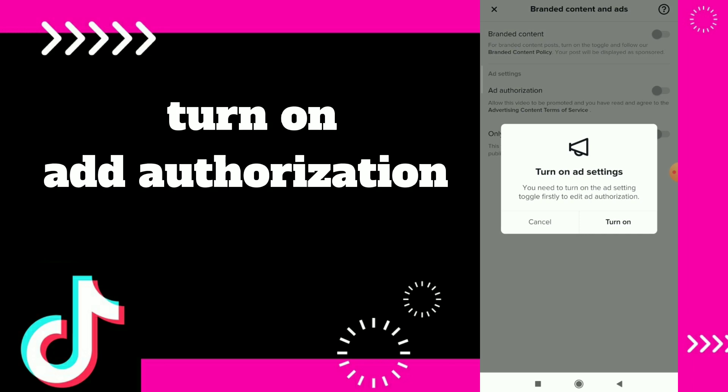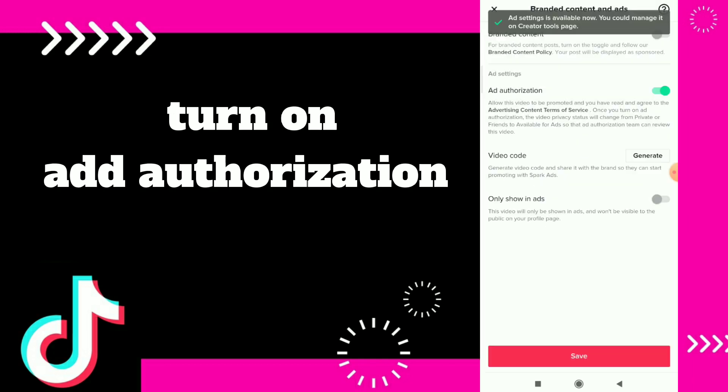You need to turn on the Ad Settings toggle first to enable Ad Authorization. Click on Turn On, and now you have turned on Ad Authorization.